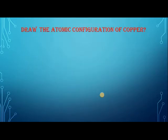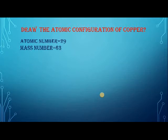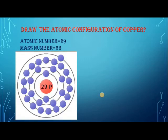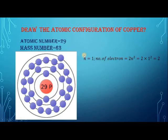Let's draw the atomic configuration of copper. Copper has an atomic number of 29 and mass number 63 — it's an isotope of copper. First we calculate the number of electrons in the first shell, where n = 1. Using 2n², it is 2 × 1² = 2. So in the first orbit there are 2 electrons, as you can see in the diagram.